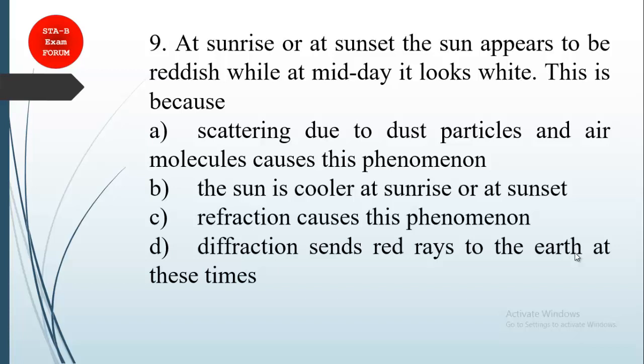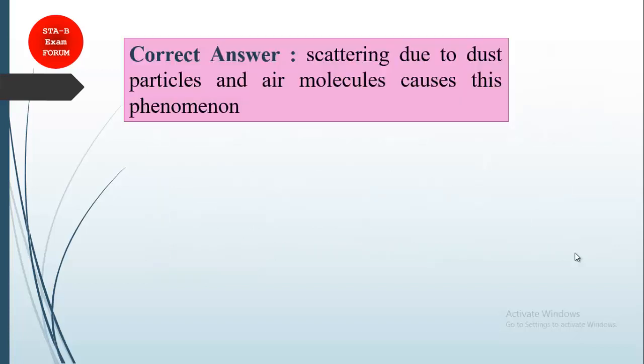The correct answer is the scattering due to dust particles. Generally, if you see red in the morning and white in the daytime, this happens due to the scattering of light by dust particles which have accumulated in the atmosphere.